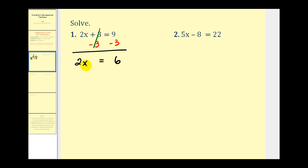And now we have two x. To isolate the variable, we have to undo this multiplication, so we have to divide by positive two — and again, we have to divide both sides by positive two. Two over two gives us one times x, or just x. And then six divided by two, x is equal to three. Let's check it: two times three is six, plus three does equal nine.